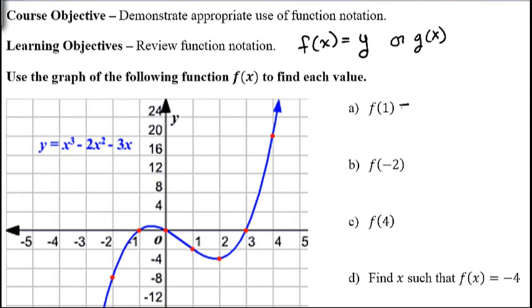To find f of 1, what we do is we go to 1 on our x-axis, so that's right here. And you go until you hit a piece of graph, and that happens right here at this dot. And then you go back over to the y-axis. This graph is marked in units of 4 going along the y-axis, and so this would have a y value of negative 4. So f of 1 is equal to negative 4.